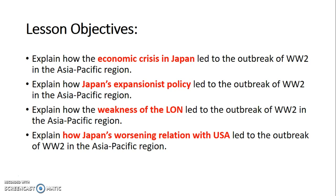So these are our lesson objectives for today: explain how the economic crisis in Japan led to the outbreak of World War II, Japan's expansionist policy, the weakness of the League of Nations, and how Japan's worsening relation with USA contributed.